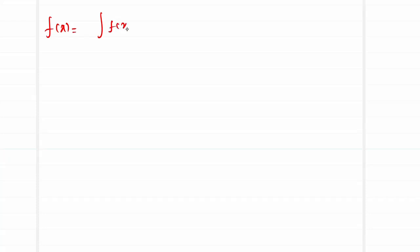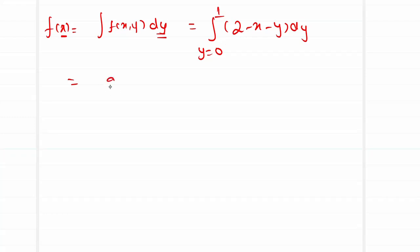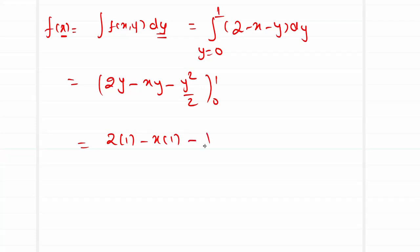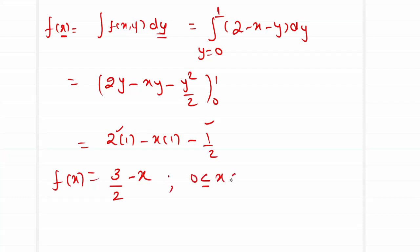To find f(x), we compute the integral of f(x,y) with respect to y: the integral from 0 to 1 of (2 - x - y) dy. With respect to y, 2 and x are constants, so this integrates to [2y - xy - y²/2] from 0 to 1, giving 2(1) - x(1) - 1/2. This simplifies to 3/2 - x. So f(x) = 3/2 - x for 0 < x < 1.